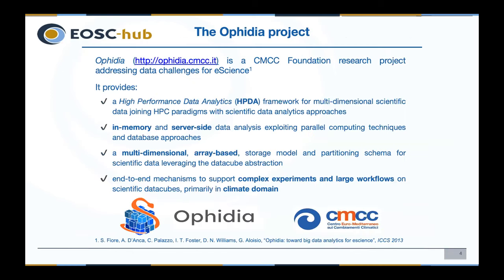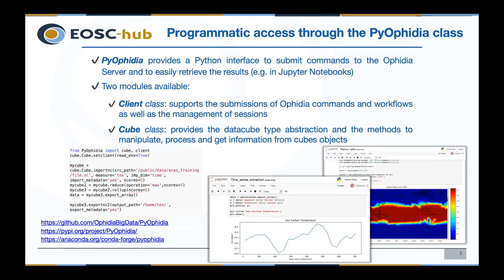The Ophidia Big Data Analytics framework is the core component of ECAS. It is a complete open-source solution for scientific data analytics using high-performance computing paradigms and in-memory big data approaches across multiple science domains such as climate change and astrophysics. It provides parallel server-side data analysis, an internal storage model for multi-dimensional datasets, and a hierarchical data organization to manage large volumes of scientific data. The Ophidia features can be directly exploited in notebooks via PyOphidia — the Python bindings — allowing easy integration of Ophidia operators and workflows into shareable data science applications.